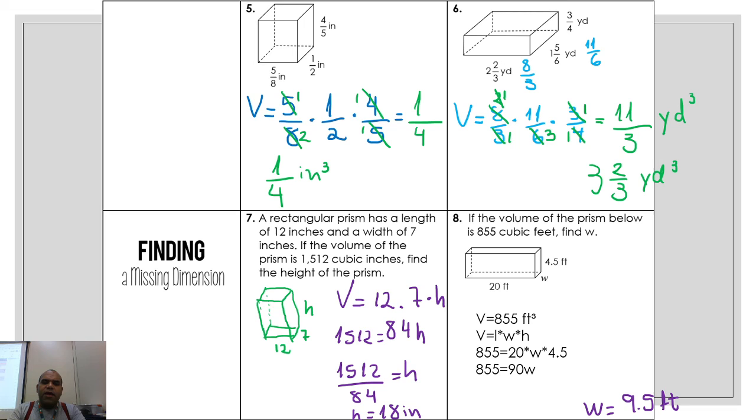And where is the variable? Right. What is the math operation tied to the variable? Multiply 90. The opposite: dividing 90. Let's divide by 90 here. It will be 855 divided by 90 equals w.